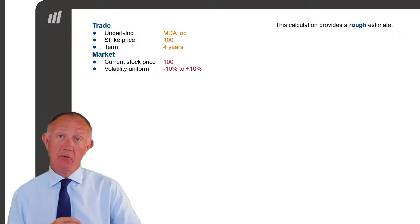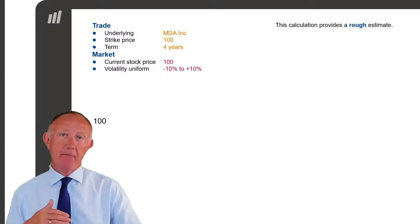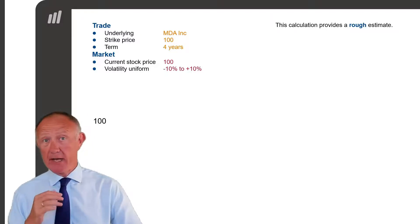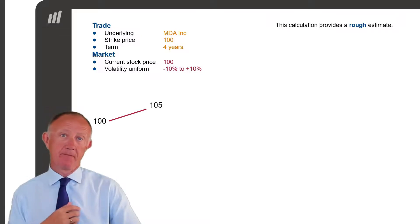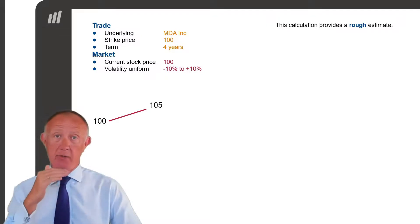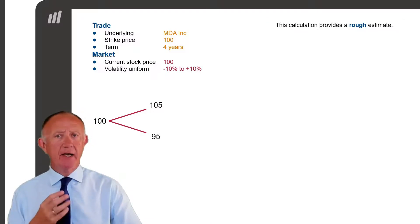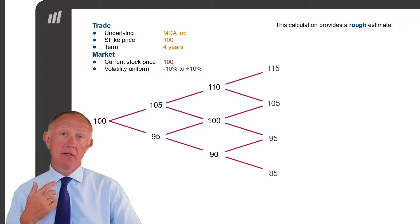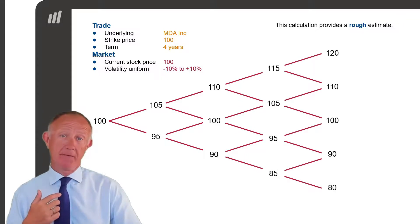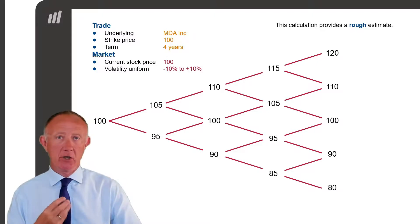You start with the current price for the asset, which is 100. You then make an assumption about where that price will go if it goes up or if it goes down. If it goes up, it can go up anywhere between 0% and 10%, on average 5%. So we end up with two possible prices for the first year, and then we continue to work for year 2, year 3, and year 4. We end up with a distribution of possible future prices for when the option matures.